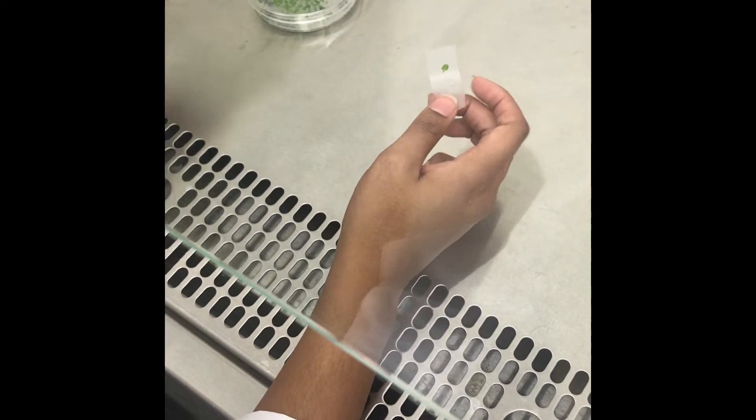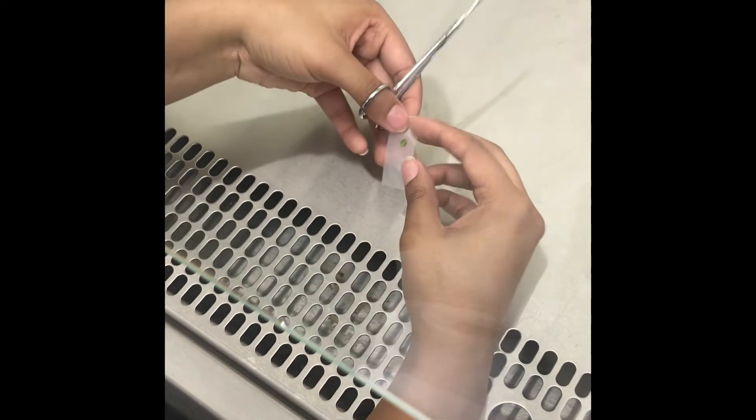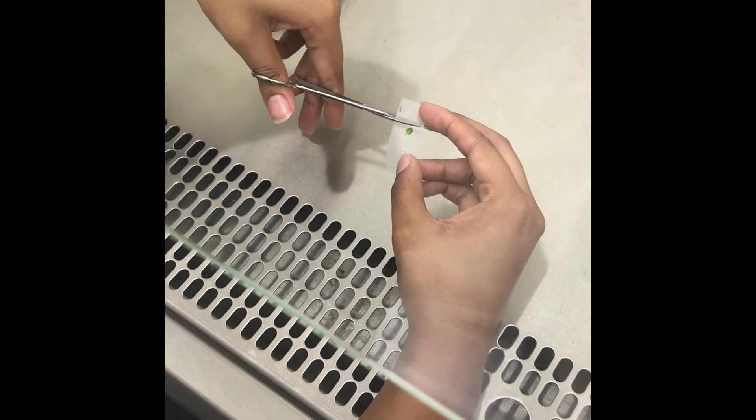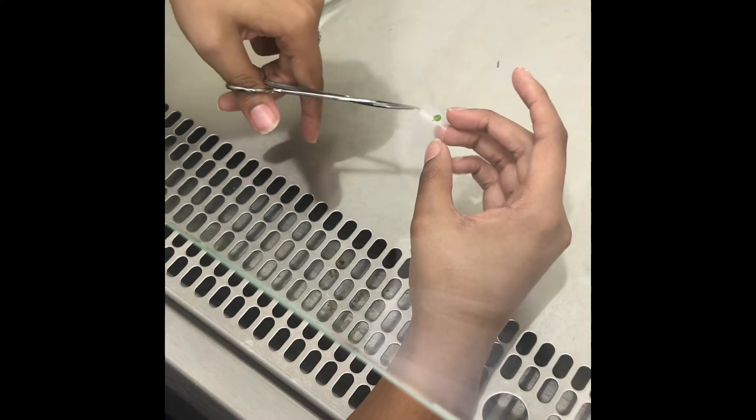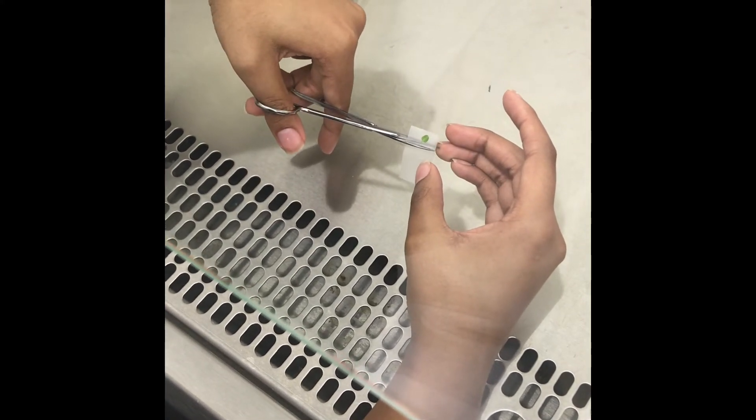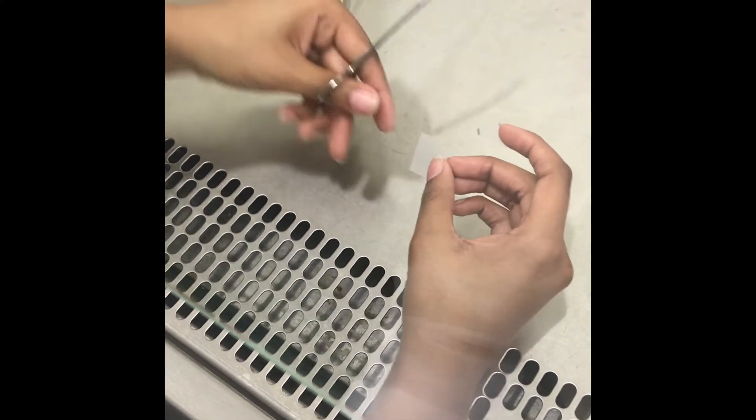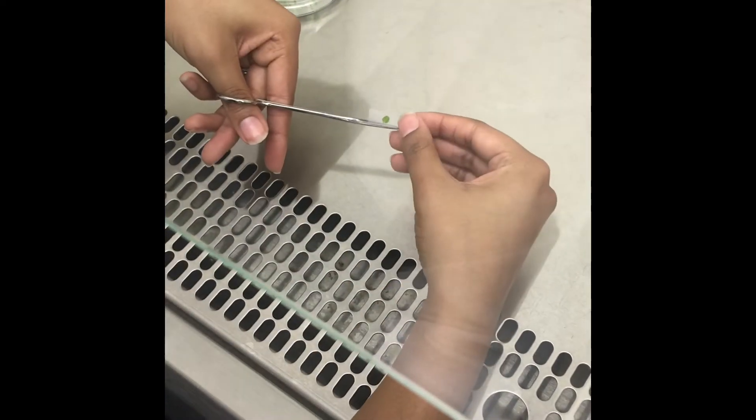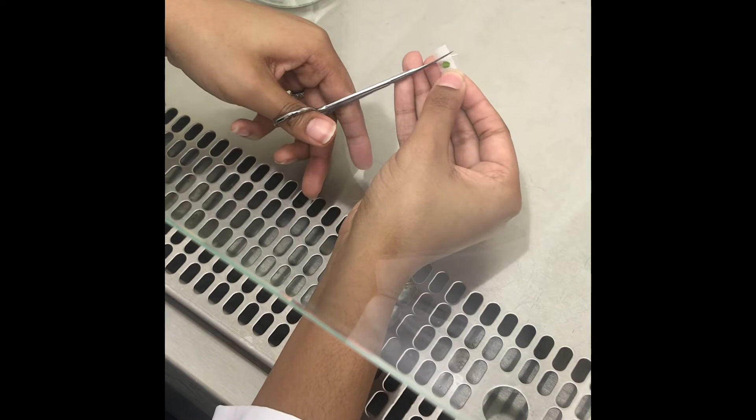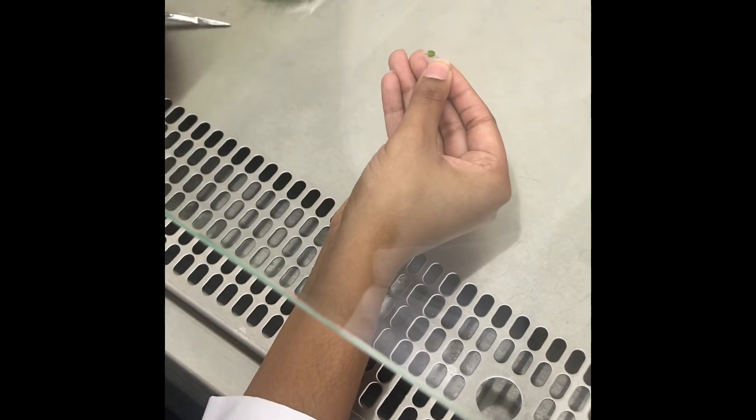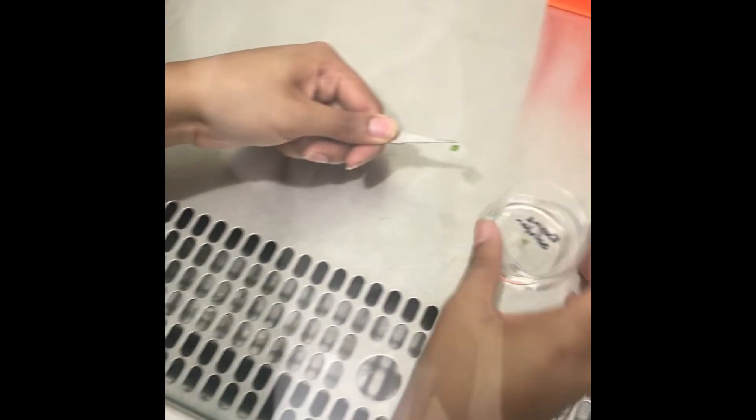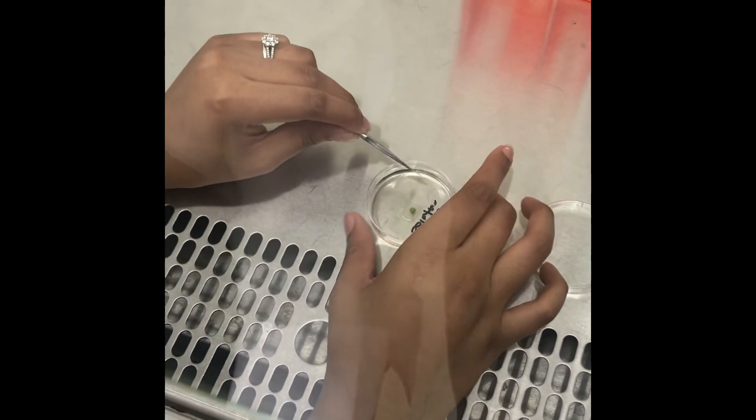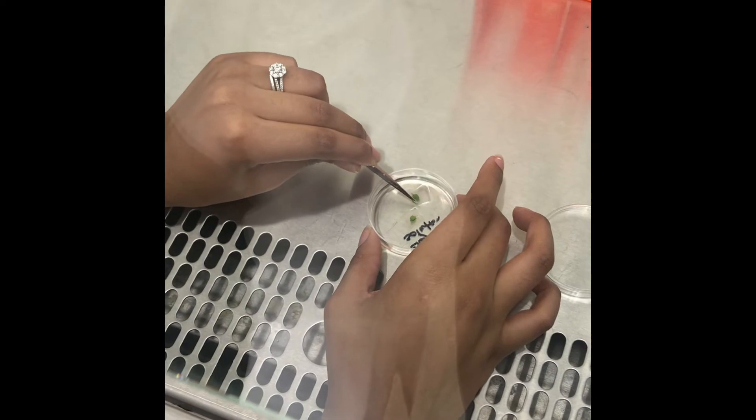So we'll discard the thinner layer and then with the remaining layer we will cut it and place it in the enzyme solution with the cells facing towards the solution.